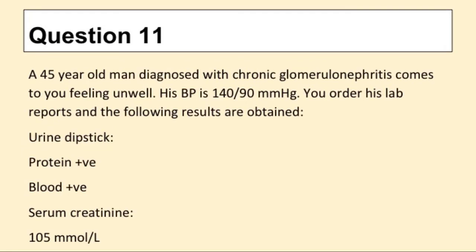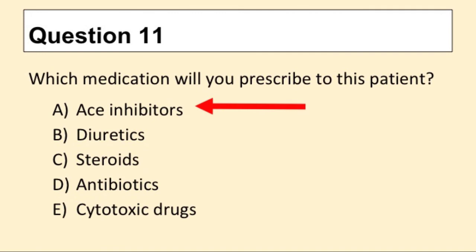Question 11. A 45-year-old man diagnosed with chronic glomerulonephritis comes to you feeling unwell. His blood pressure is 140/90. You order his lab reports and the following results are obtained. Which medication will you prescribe to this patient? The answer is A: ACE inhibitors.